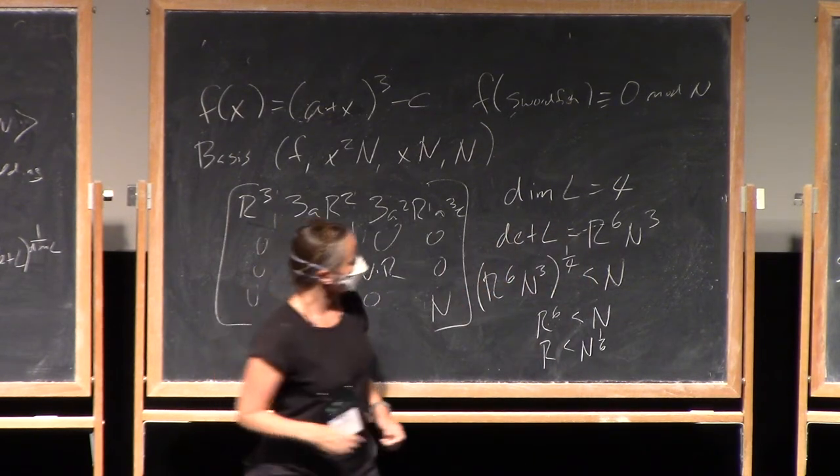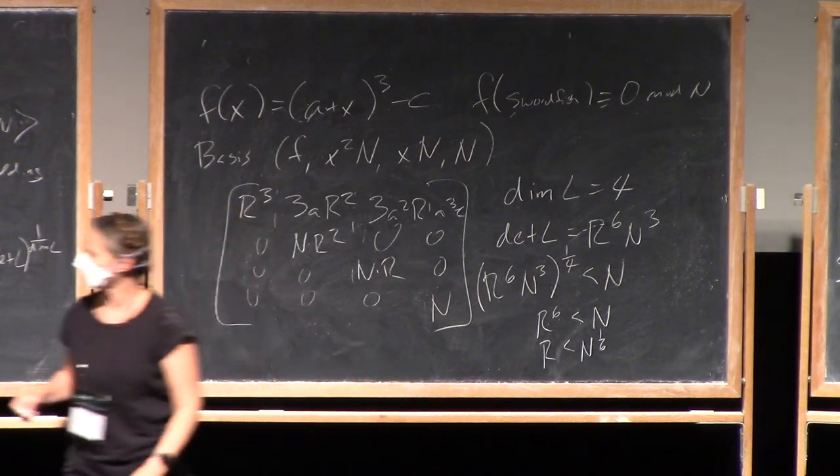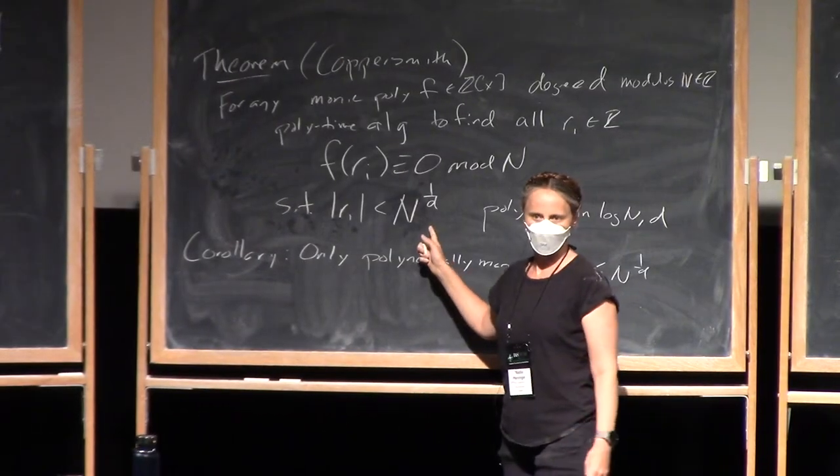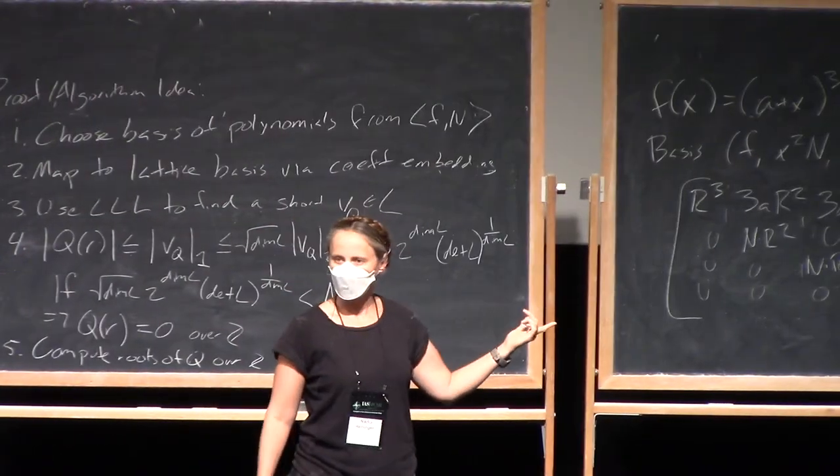All right, so I have a degree three polynomial, but I got a one sixth there. So we didn't quite get all the way to n to the one over d, but we did pretty well for dimension four lattice, I think.